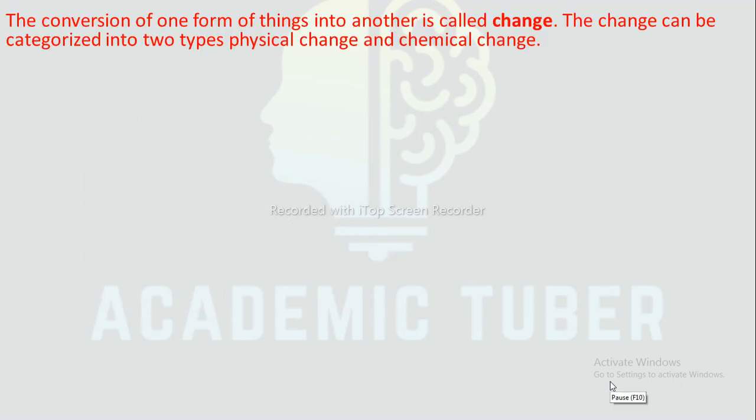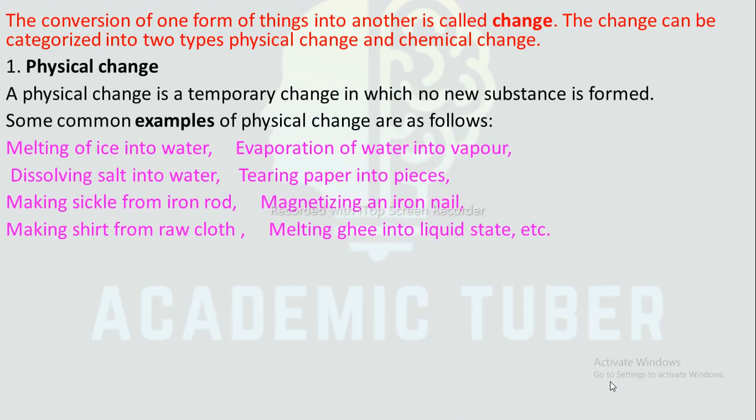The conversion of one form of things into another is called change. The change can be categorized into two types: physical change and chemical change. Physical change is a temporary change in which no new substance is formed. Some examples of physical change are as follows.